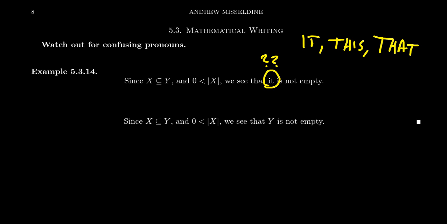And so you should clarify which one you're referring to. So an improvement would be: since X is a subset of Y and the cardinality of X is greater than zero, we see that Y is not empty.